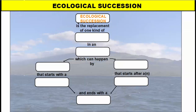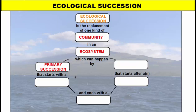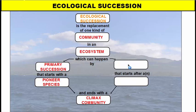Ecological succession is the replacement of one kind of community in an ecosystem, and this can happen in one of two ways. First, we have primary succession, which usually begins with a pioneer species that lives on bare rock, and over time that bare rock and those pioneer species will be replaced and the area will end up becoming what's called a climax community. Secondary succession starts after an ecosystem experiences an interruption or a disaster, and over time that area will repair itself and become a climax community again.